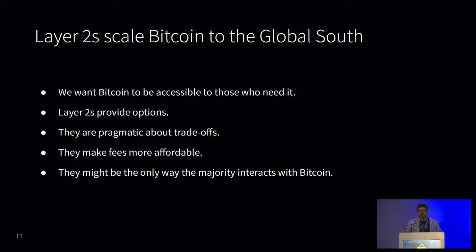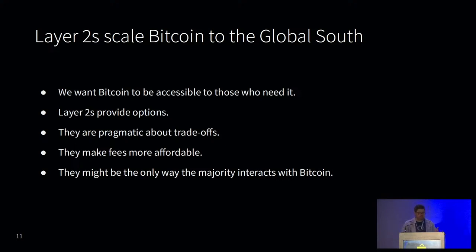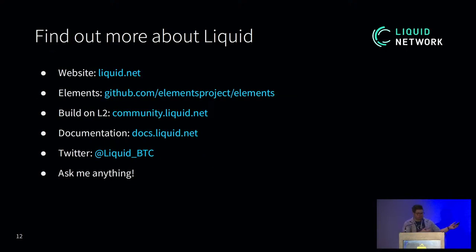Layer 2s are the first step to scaling Bitcoin to the Global South. We want Bitcoin to be accessible to those that need it most — the people most affected by inflation who need to save their purchasing power, who need permissionless, censorship-resistant digital money that cannot be debased. Layer 2s provide options: instant micropayments on Lightning, Liquid for consolidation or swapping to USD Tether to manage Bitcoin's volatility, enhanced privacy, and lower fees for people that earn a fraction of the income of those in the first world. The easiest way to get started is to download the Aqua Wallet by Jan3 or Blockstream Green, where you can use Bitcoin, Lightning, Liquid, USD Tether and more. Find out more at liquid.net.